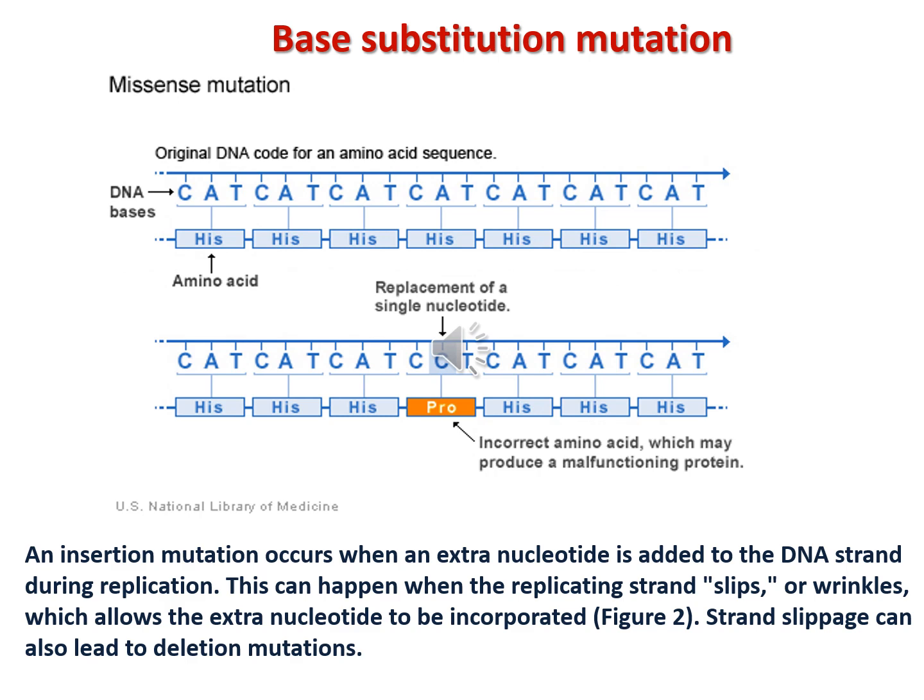What about insertion and deletion? This normally occurs when an extra nucleotide is added to the DNA strand. It happens when the replication strand gets slipped or wrinkled, which allows an extra nucleotide to come in and some nucleotides to be missed, and that leads to the formation of a different protein.